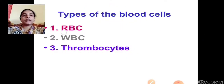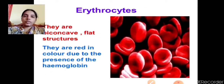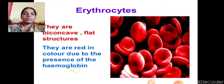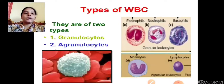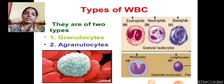The types of blood cells are RBC, WBC, and thrombocytes. Erythrocytes (RBCs) are biconcave, flat, and red in color due to the presence of a pigment called hemoglobin. Their main function — by the help of hemoglobin — is the exchange of gaseous molecules, supplying oxygen to all cells. WBCs are also called white blood cells or white blood corpuscles.